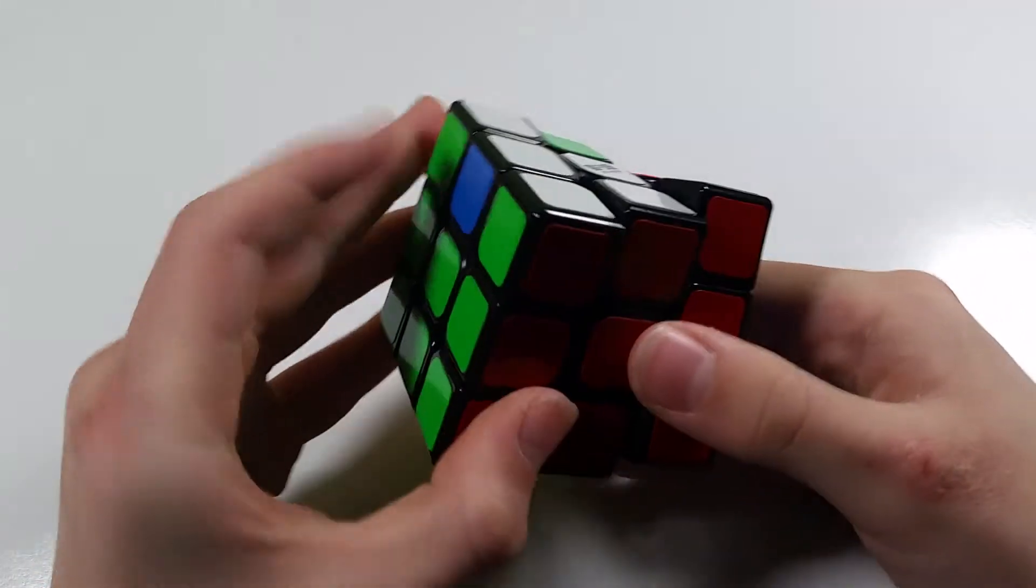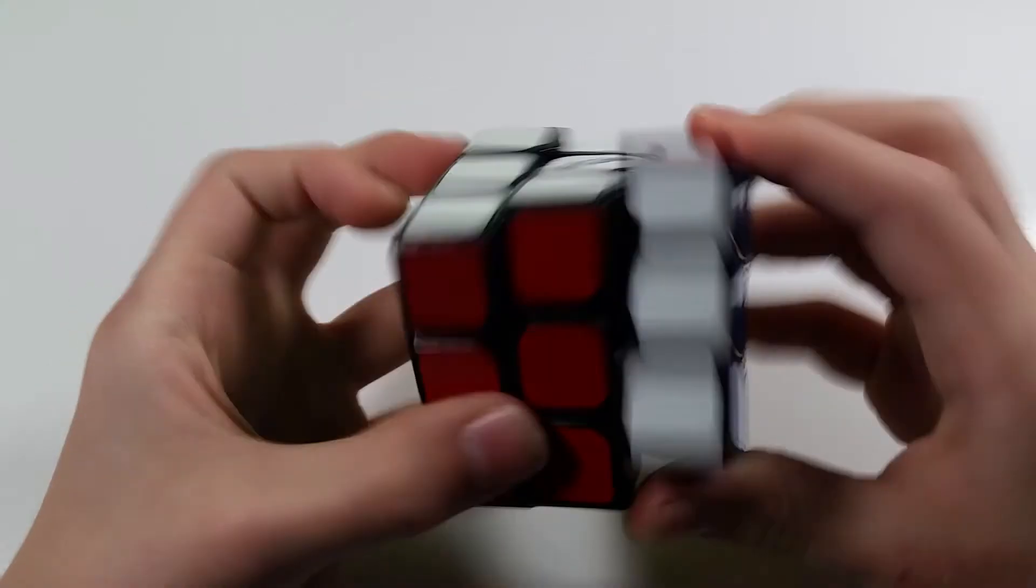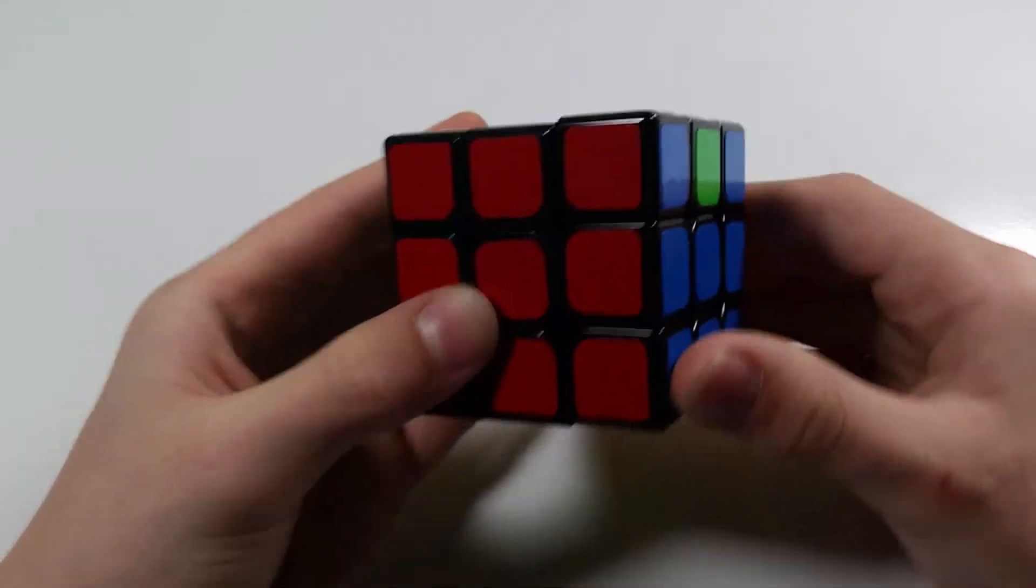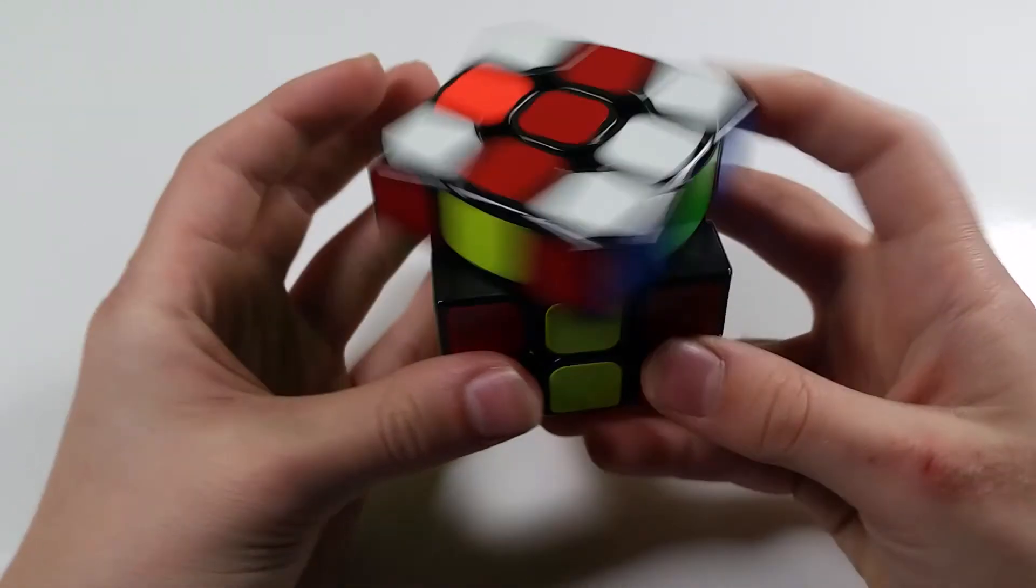There are alternative angles like this one that you can solve with a variation of the algorithm. However, I find this one the fastest to do. So one more time, it's M' U M U2 M' U M.